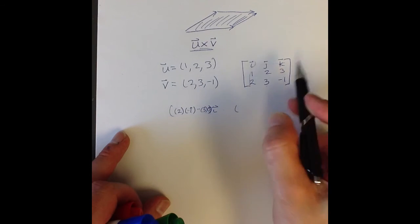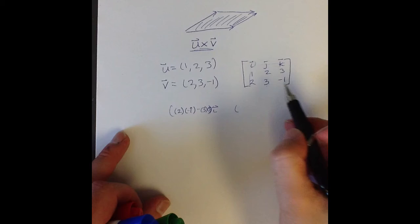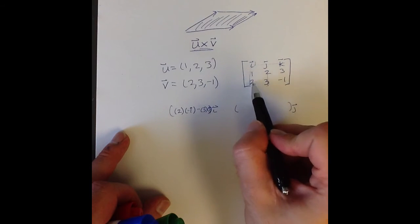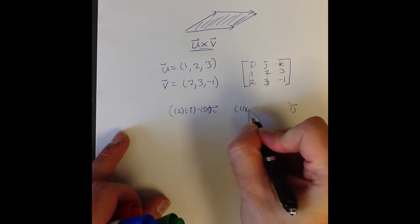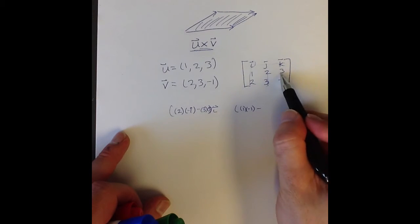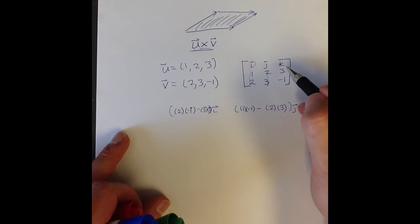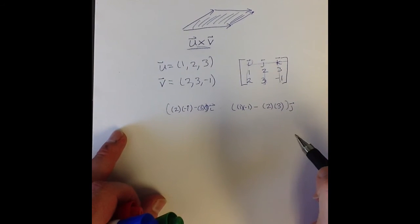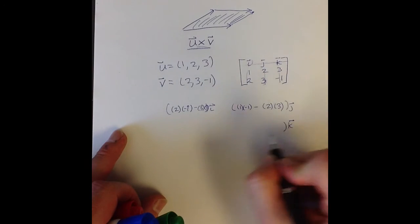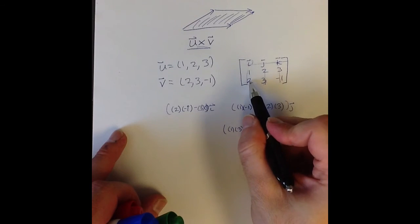Then we do the same thing for j: cross out the row and column containing j, which gives four numbers. The pattern is 1 times -1, minus 2 times 3. Then for the k vector, cross out the row and column containing k, leaving four numbers, and apply the pattern: 1 times 3, minus 2 times 2.